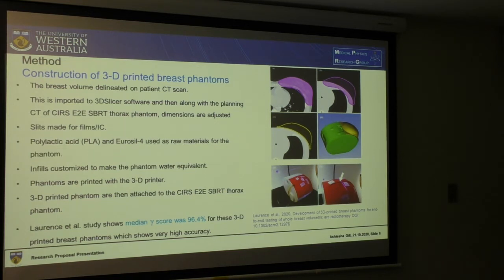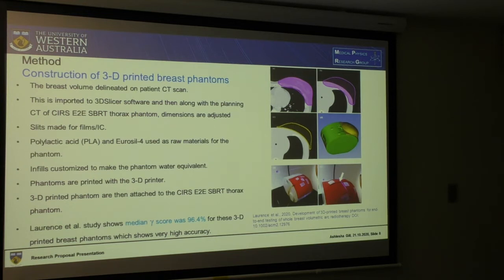Along with a thorax phantom, we will adjust its size, then make slits for the films and the ionization chamber. We will use polylactic acid and uracil for the raw materials, and make it water equivalent using the infills. Finally, the phantom can be printed with the 3D printer and attached to the thorax phantom.